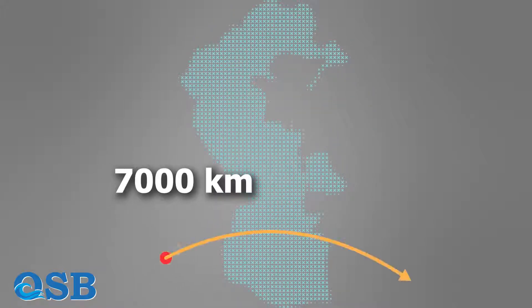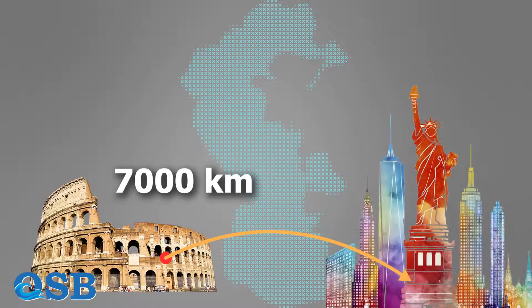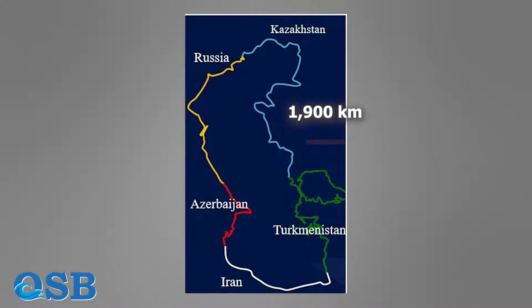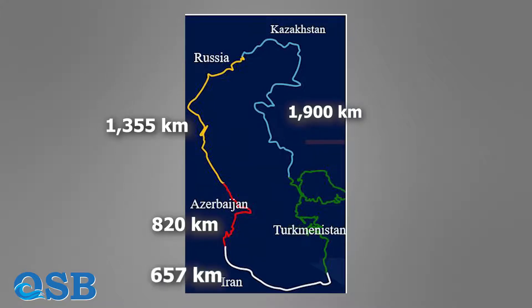Estimates show that the length of the coastline of this water basin is about 7,000 km, roughly the distance from Rome to New York. Of this amount, approximately 1,900 km belong to Kazakhstan, 1,355 km to Russia, and 820 km to Azerbaijan. Iran and Turkmenistan have about 657 and 1,768 km of coastline with the Caspian Sea respectively.